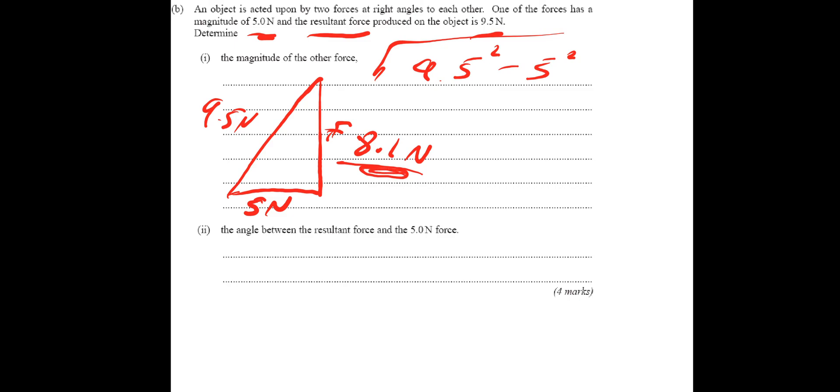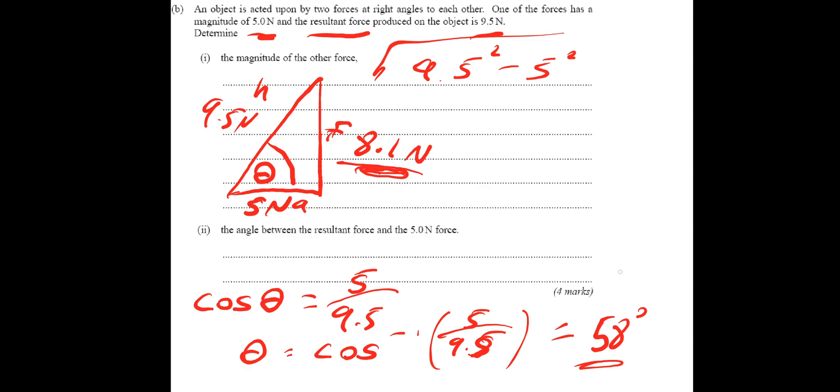Then it just wants the angle between the resultant force and the 5 newton force. So the resultant force is the 9.5 and the 5 newton force is there. So this angle. So I'll call that theta. And this time, we've got the hypotenuse and adjacent. So we're going to do some trigonometry again. So A and H. So that's cos. Or cosine. So cosine theta is equal to A divided by H. So that would be 5 over 9.5. So theta, if we're writing it correctly, would be equal to inverse cos of 5 over 9.5. Put that into your calculator. See what you get. And we get 58 degrees. Note that everything is to two significant figures. So my answer here, the 8.1 newtons and the 58 degrees both to two significant figures. Because all of our data is given to two significant figures.